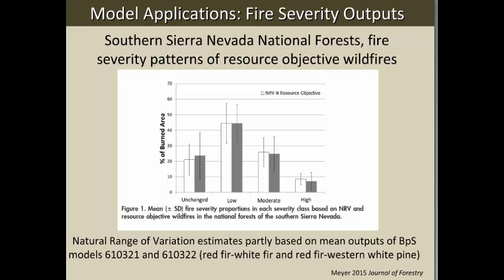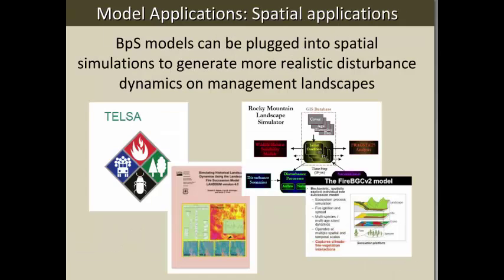Another application involves work with the University of Massachusetts. BPS models can be plugged into spatial simulations, which allow much more realistic dynamics for disturbance on management landscapes. These require knowing a lot more about your system and finding spatial information not needed for a simple state transition model. The work on the Tahoe National Forest took nearly two years just to get models up and running — not the kind of time management agencies typically have. Examples of tools that take state transition models and apply them spatially include TELSA from ESSA, LandSum from Bob Keane's lab, FireBGC, and the Rocky Mountain Landscape Simulator (RM Lands) from Kevin McGarigal at the University of Massachusetts.